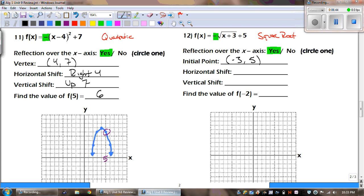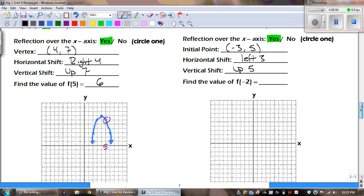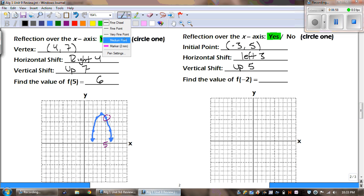Our horizontal shift tells us to go left 3. And then vertical shift is up 5. So, left 3 and up 5 is going to put us in which quadrant? Yeah, that's quadrant 2.